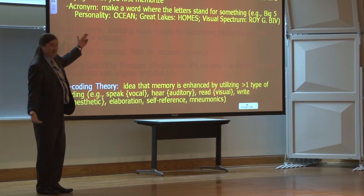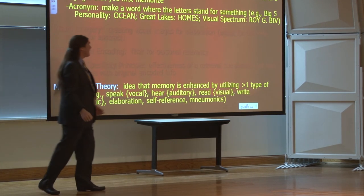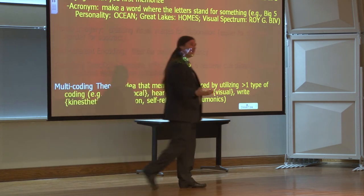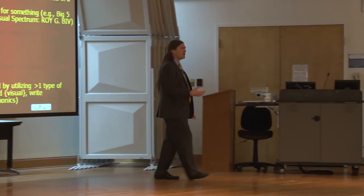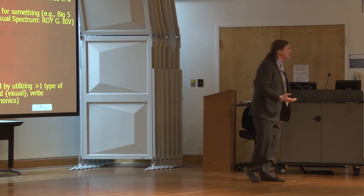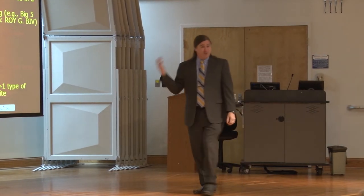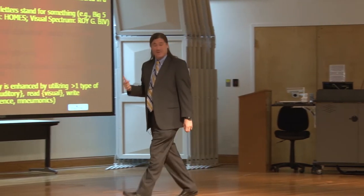The acronyms where we left off, we talked about OCEAN being your big five personality traits, HOMES being the five great lakes, visual spectrum being Roy G. Biv, and you could go on and on. If you're going to go into medicine, you're going to have to know the 12 cranial nerves. Be helpful if you came up with something catchy to help you remember that.